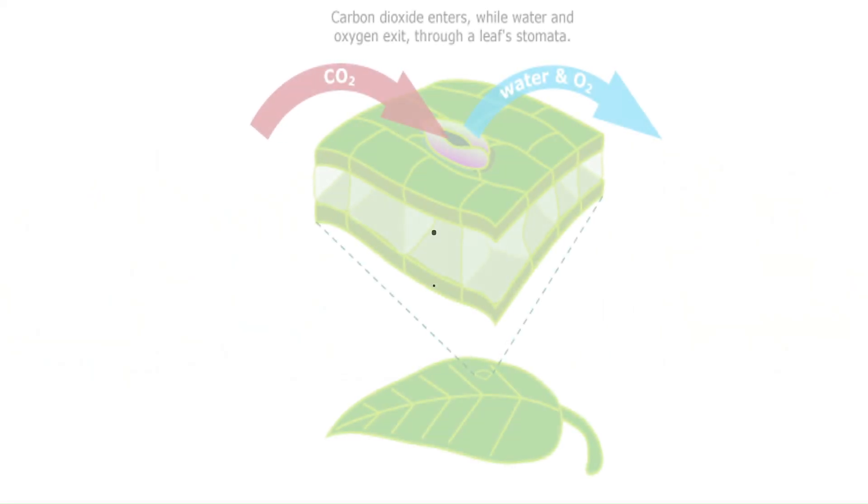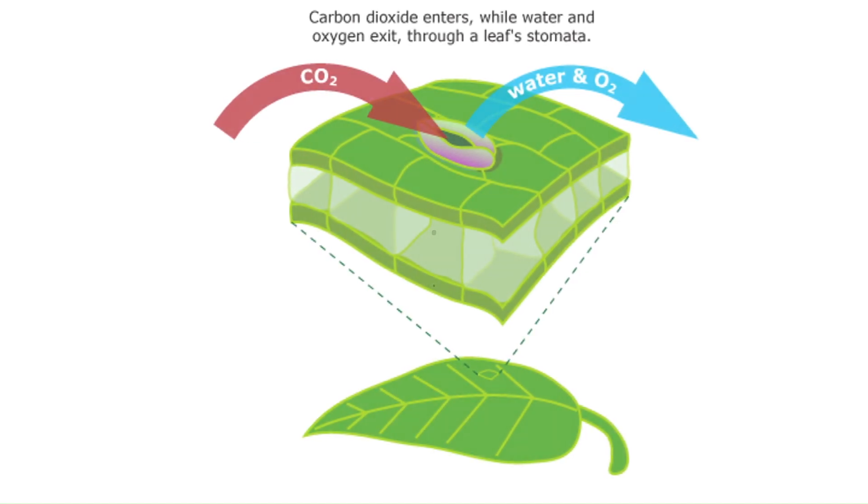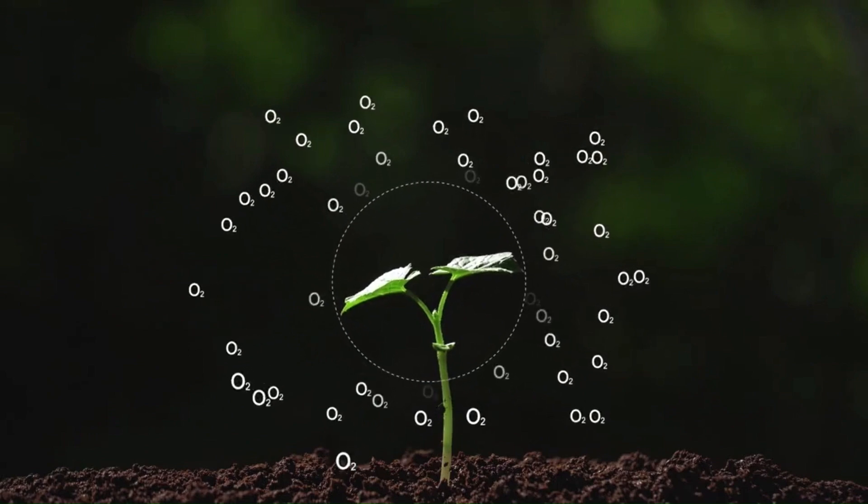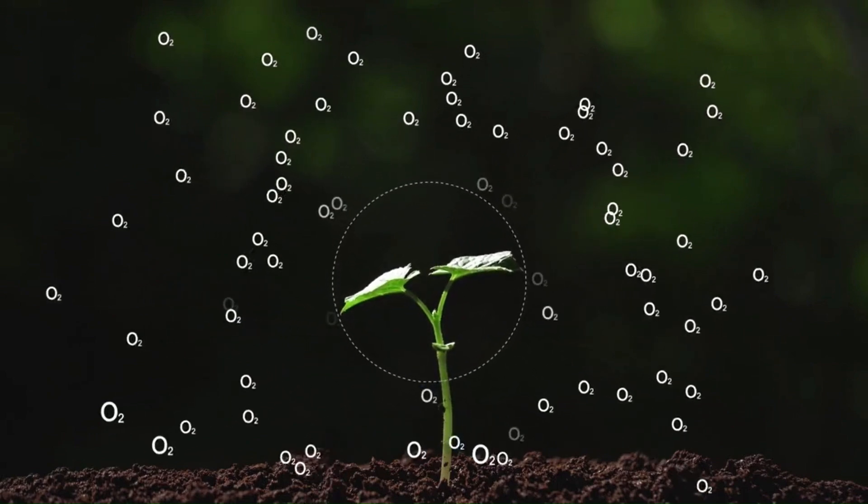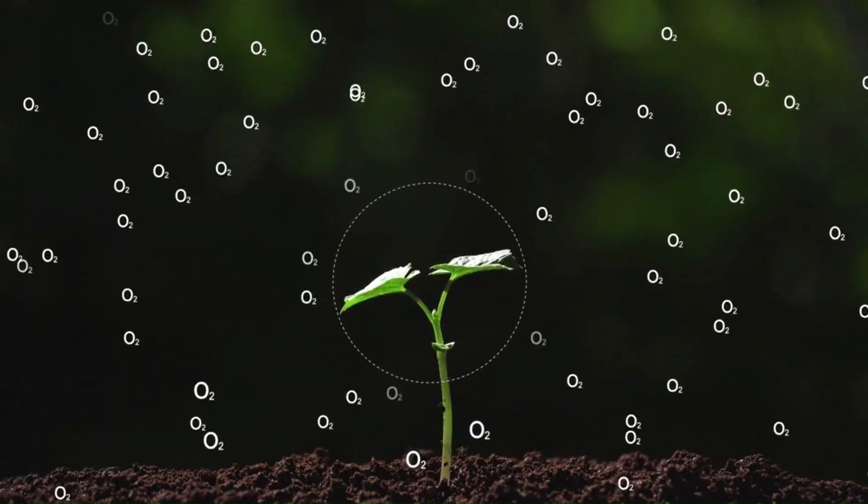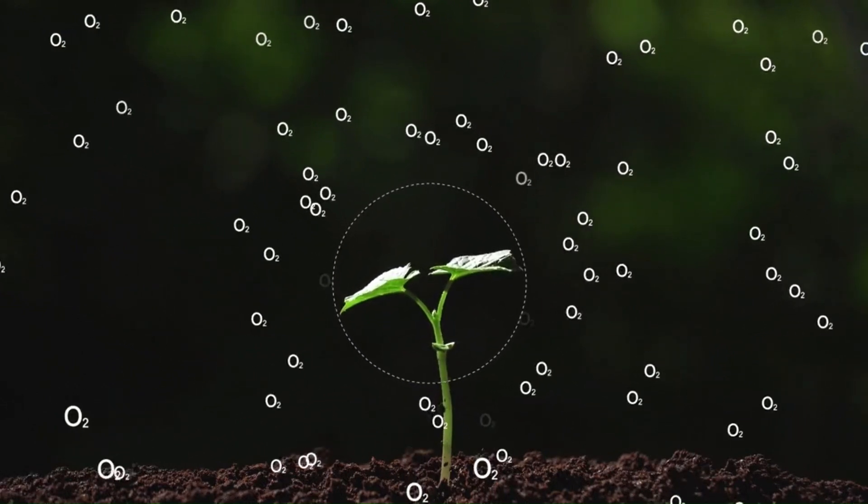So why is this so important? During the day, stomata open to take in carbon dioxide for photosynthesis. That's the process that plants use to make food using sunlight. At the same time, oxygen, a by-product, is released. This oxygen is what we breathe. Thanks, plants.